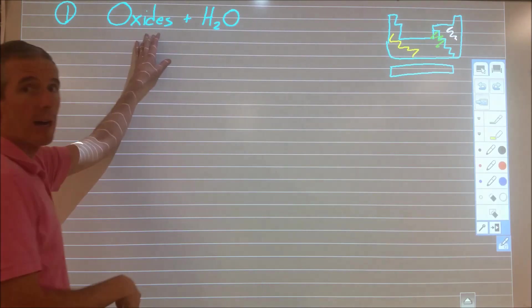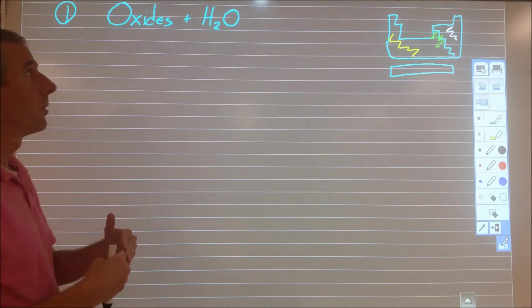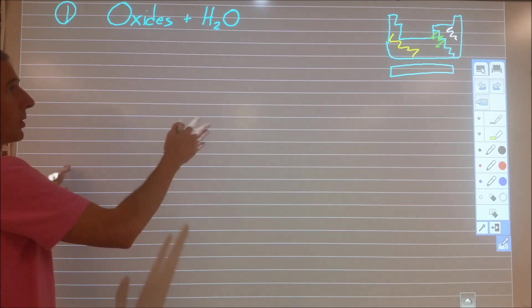So the first type was we took some kind of oxide, either a non-metal, a metal, or something in between the two, and added water to it. So let's go through each one.